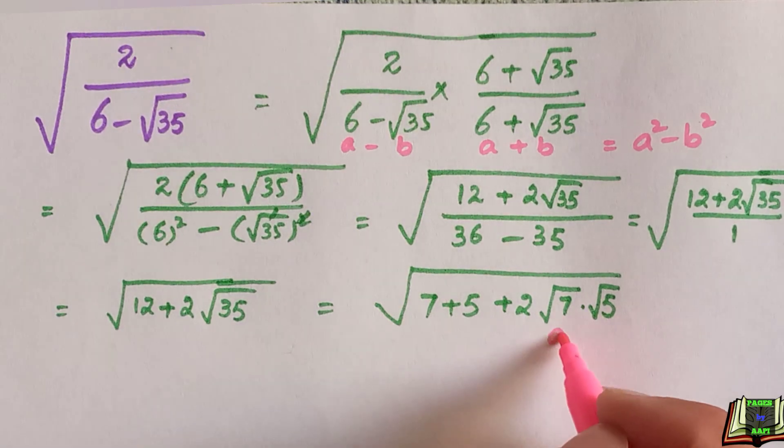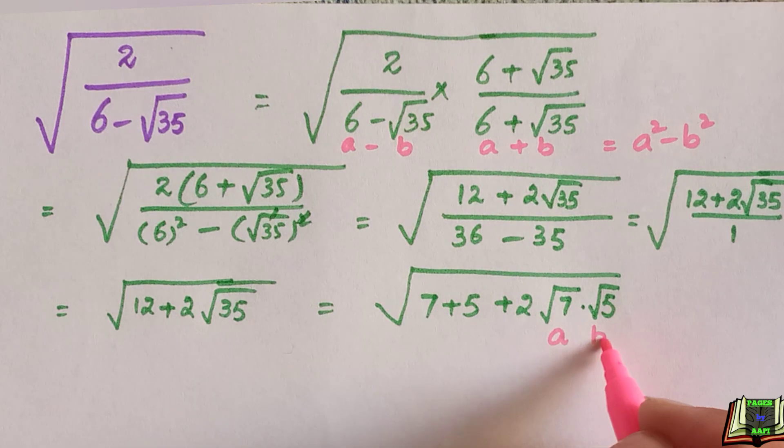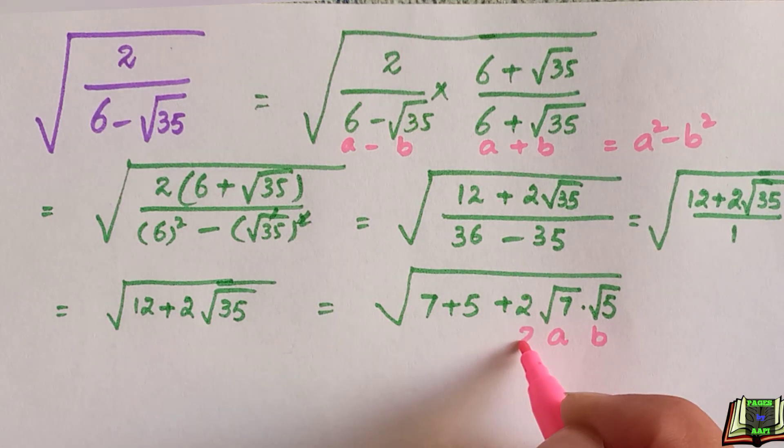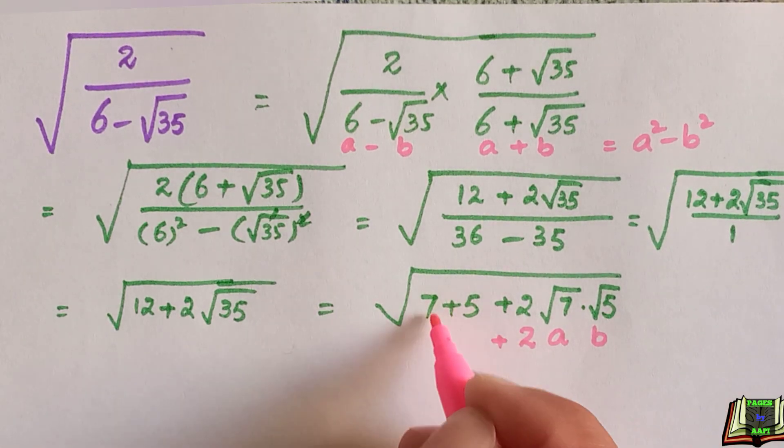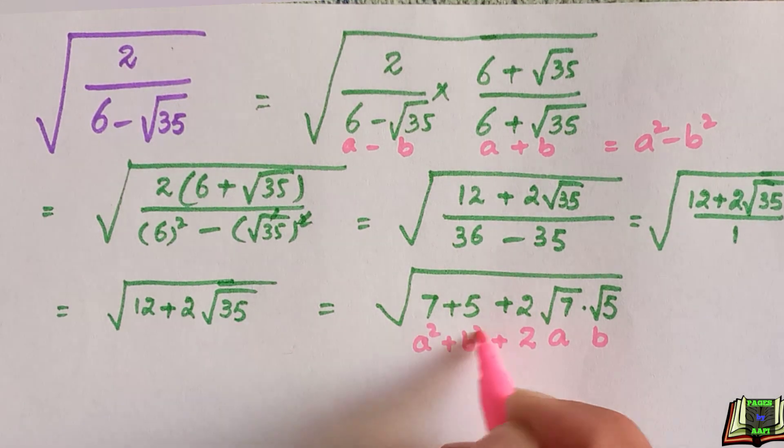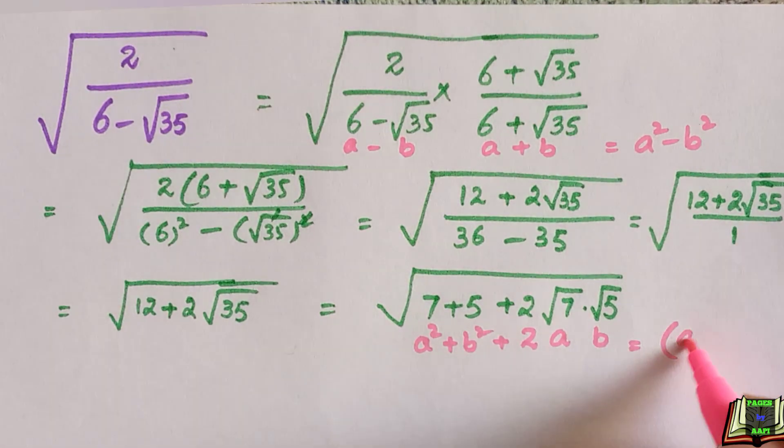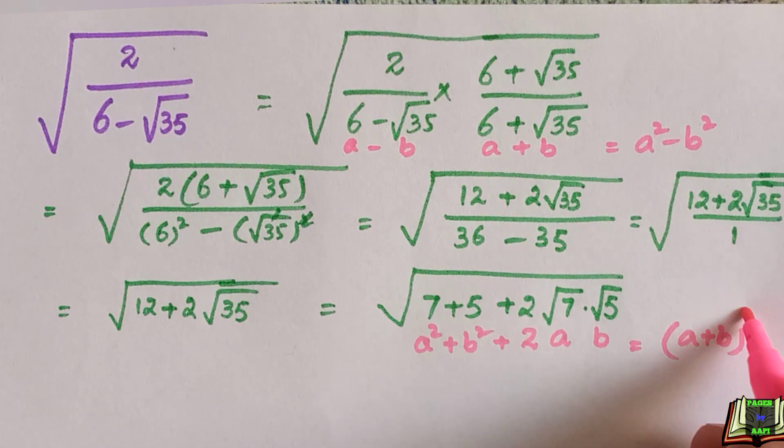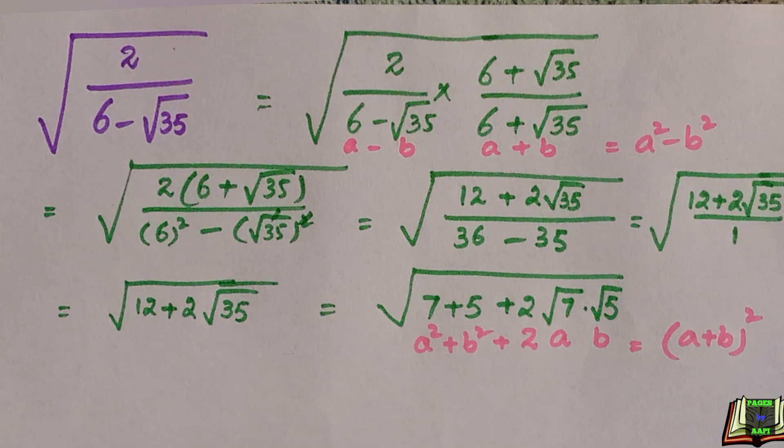Let's suppose this square root of 7 is a and square root of 5 is b. So this 7 will be equal to a square and this 5 will be equal to b square. Now it becomes an algebra identity which is equal to a plus b whole square.